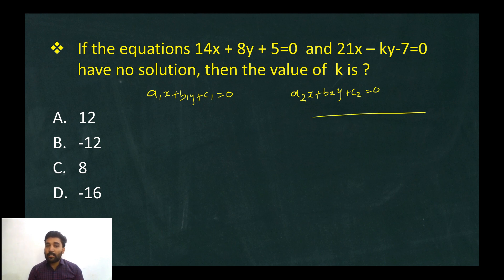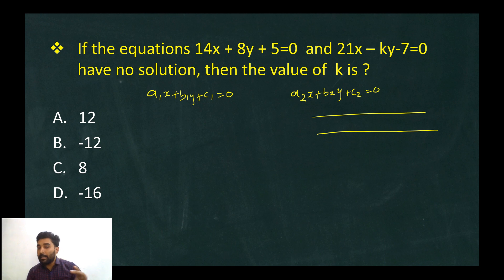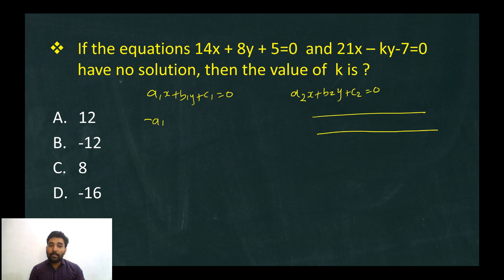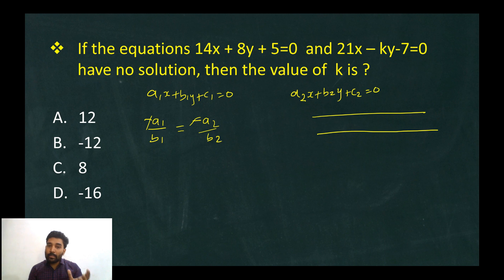Since the lines are parallel, they are not intersecting. The condition for no solution is that the slopes are equal: minus a1 over b1 equals minus a2 over b2, which means a1 over b1 equals a2 over b2.